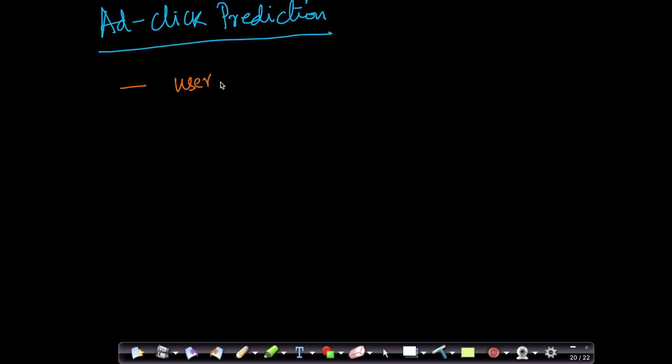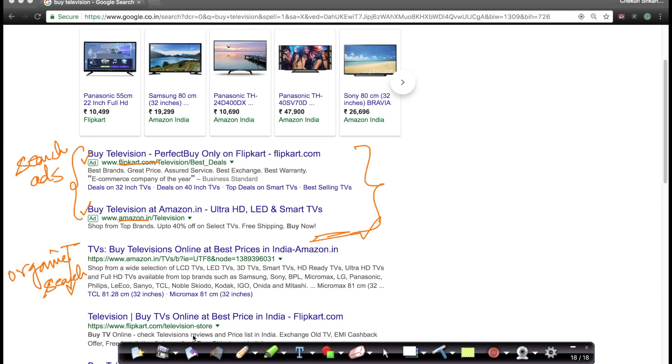You're given information about the user, you're given information about the search query. In our case the search query was buy television. We also have multiple other points of information like what is the ad, who is the advertiser. In the previous case we saw Amazon and Flipkart to be advertisers. Given all this information we have to predict what is the probability of click, because how does Google make more money? Google should place the ad which has the highest chance of being clicked at the top. So Google will try to predict what is the probability of this ad click given all the information about the user, advertiser, search query, etc.